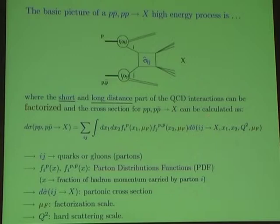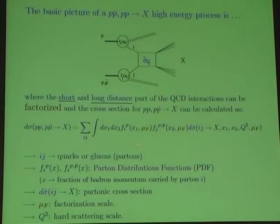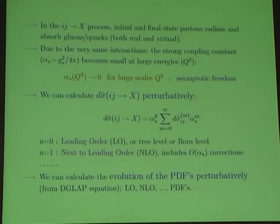The problem reduces to how to calculate higher-order QCD corrections — how to calculate the sigma-hat cross-section in QCD — and the parton distribution functions. Our main focus here will be on the next-to-leading order calculation of the sigma-hat, the parton-level process.